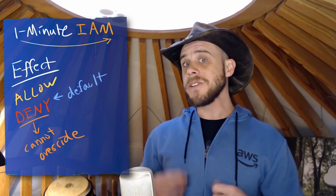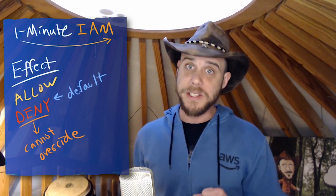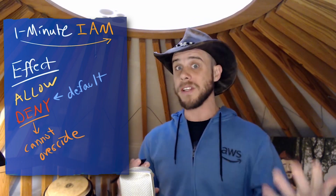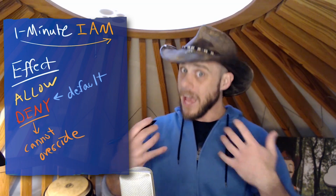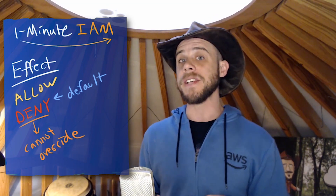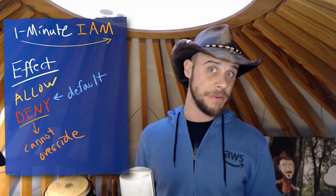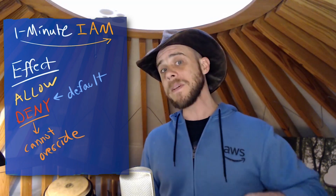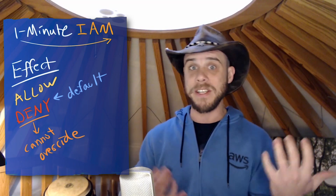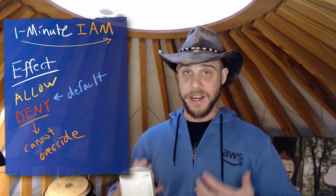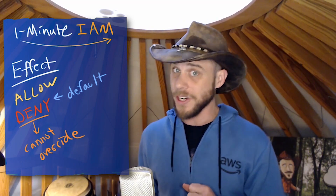Keep in mind, friends, that as you're designing your identity and access management policies, we always want to consider a few factors: when to use allow and deny, how to get them to work together, how they're going to work with the default permission set, and always remembering that a deny can never be overridden. Keep this in mind as we talk more in future lessons about how to use allow and deny effects together to get exactly what you're looking for out of your security policy.